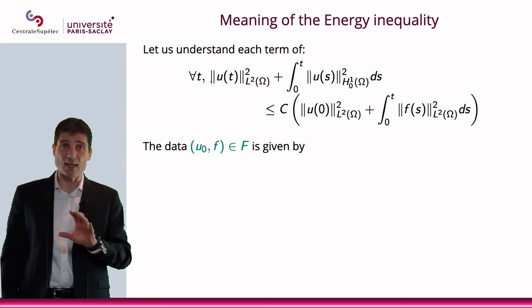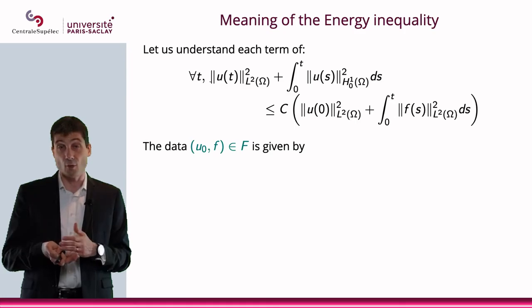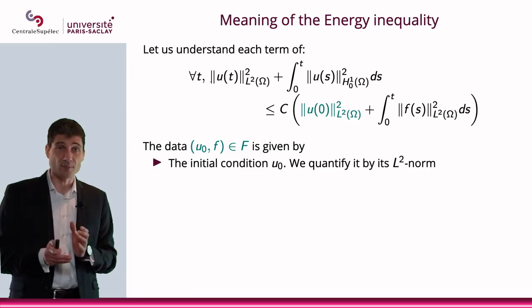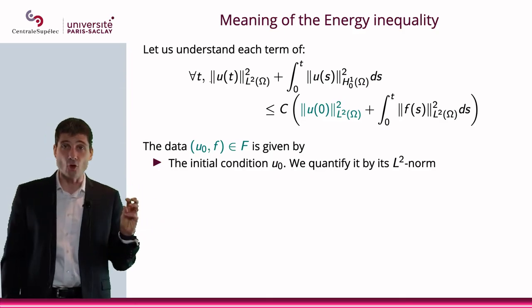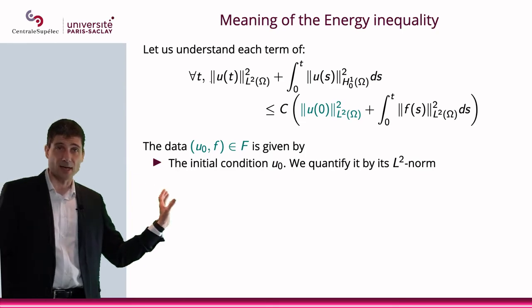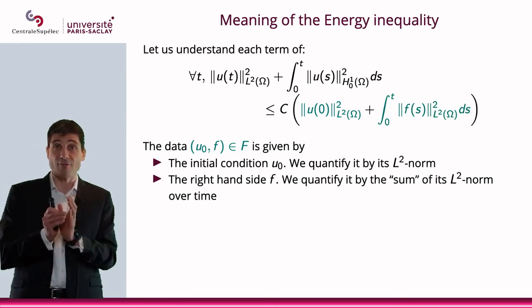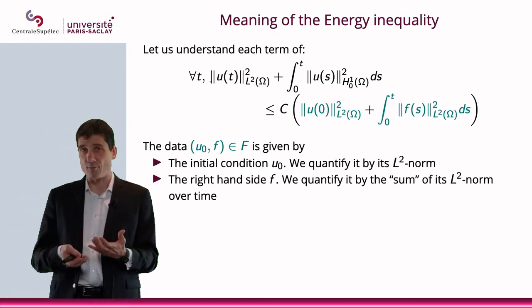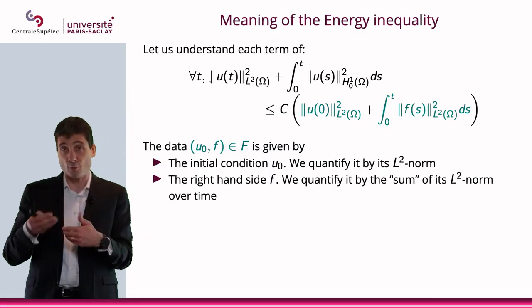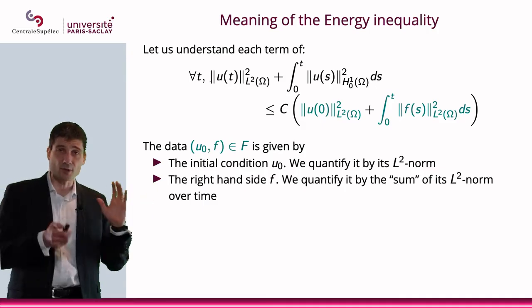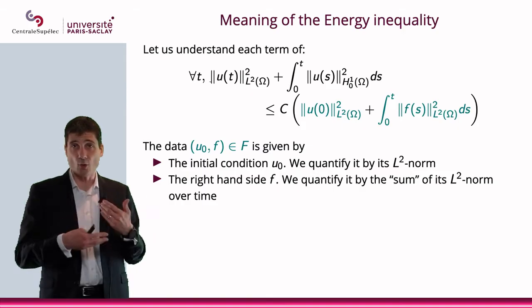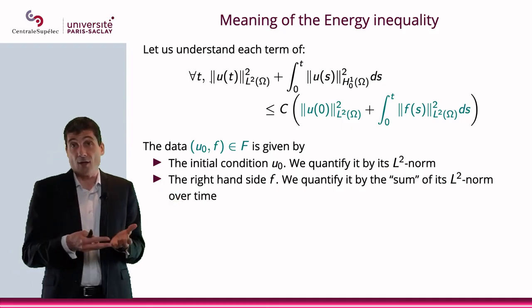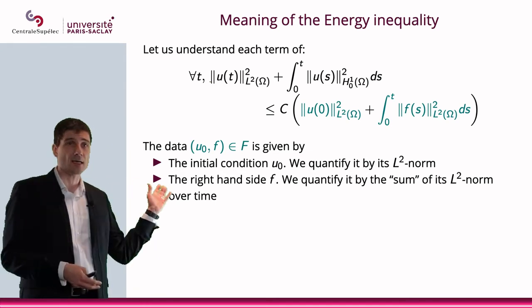First, remember we have the data: the initial condition U₀ and the heat source F. That is in the space F we defined earlier. We have the L² norm of the initial condition, which appears on the right-hand side. We also have F, which is the right-hand side to the PDE, and we quantify the sum of its L² norm over time — basically the L² norm defined in a previous video. So these two terms on the right-hand side tell you that the solution will be bounded by things you know: your initial condition and your heat source.